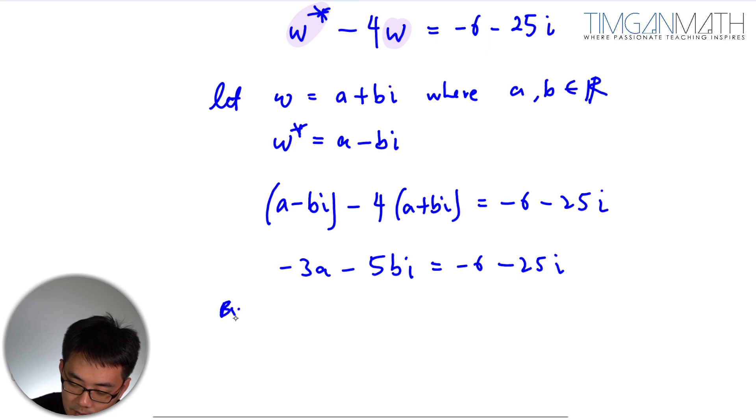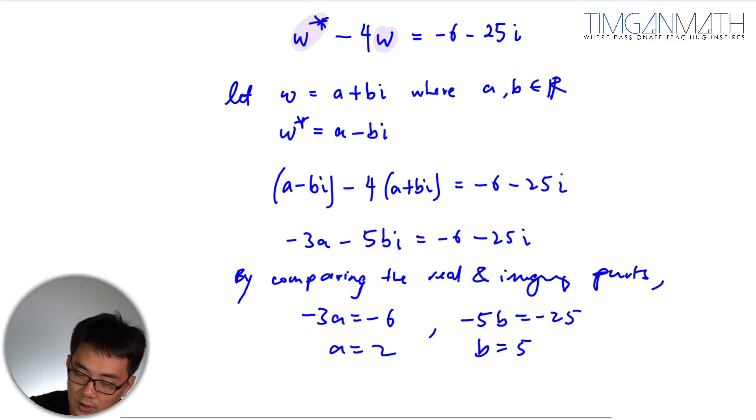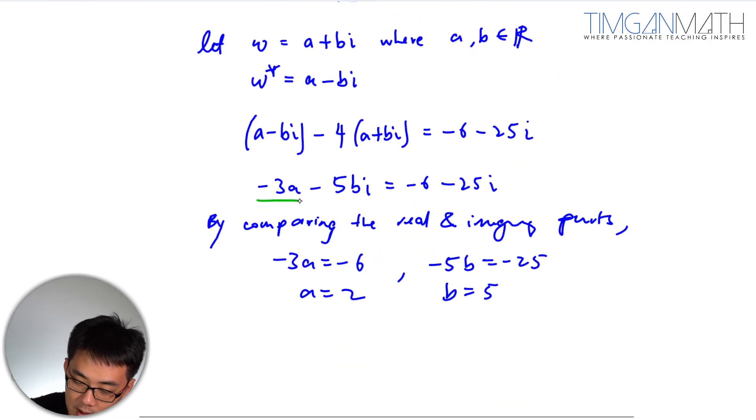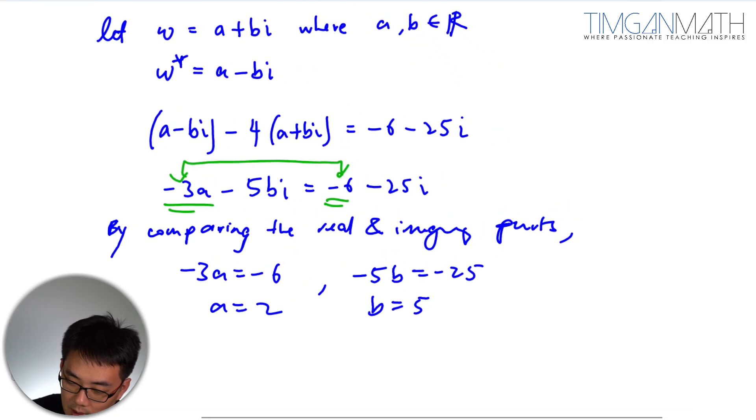So hence, by comparing the real and imaginary parts, you have minus 3a equals minus 6, so a equals 2. Minus 5b equals minus 25, so b equals 5. We compare by looking at the real equals real, and the imaginary equals imaginary.